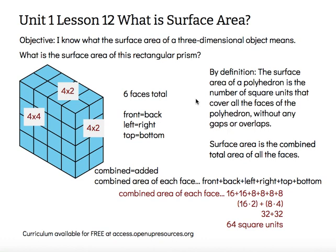We can combine that in a variety of ways. We have two 16s — 16 times 2 is 32. We have four 8s — 8 times 4 is also 32. So 32 plus 32 tells us that there are 64 square units that make up the faces of this rectangular prism.